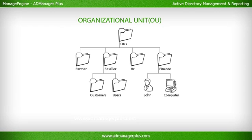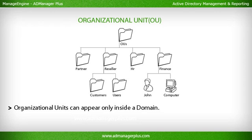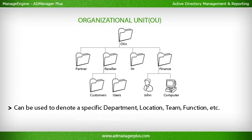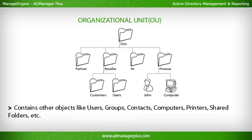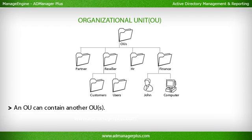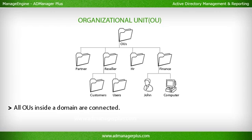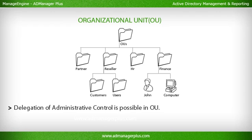Active Directory organizational units can appear only inside a domain. They can be used to denote a specific department, location, team, function, etc. OUs are unique inside a domain and can contain objects like users, groups, contacts, computers, printers, shared folders, etc. An OU can contain other OUs — nested OUs have a parent-child relationship. Group policy settings can be set at the OU level, delegation of administrative control is possible in an OU, and child OUs inherit the properties of the parent OU.